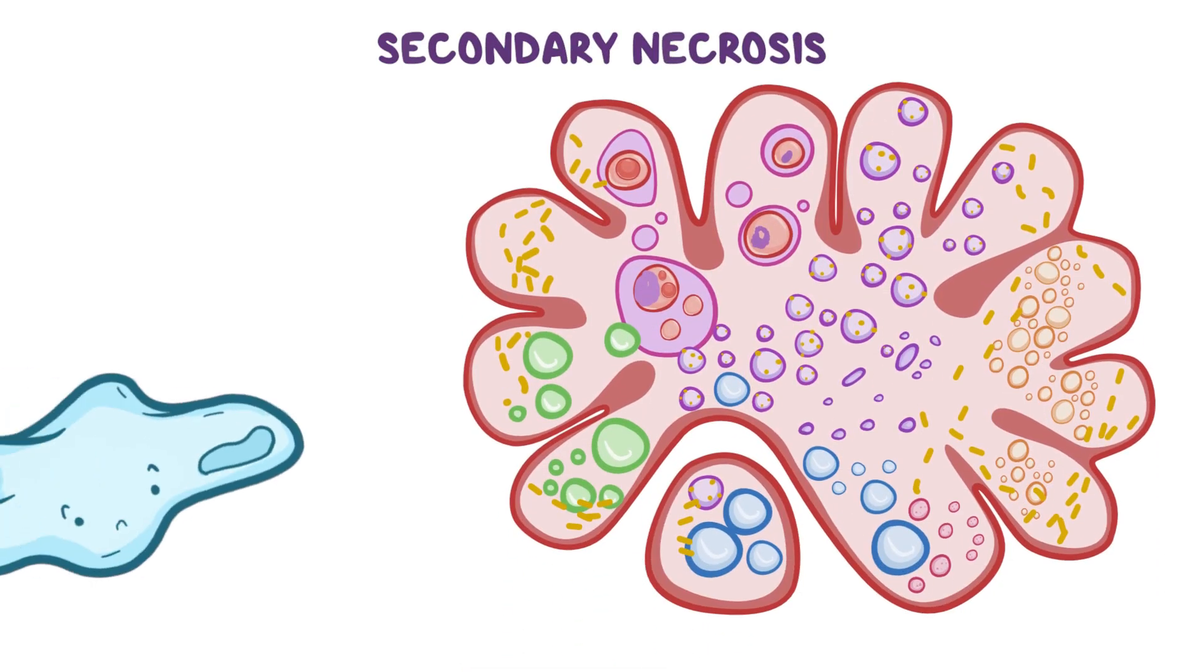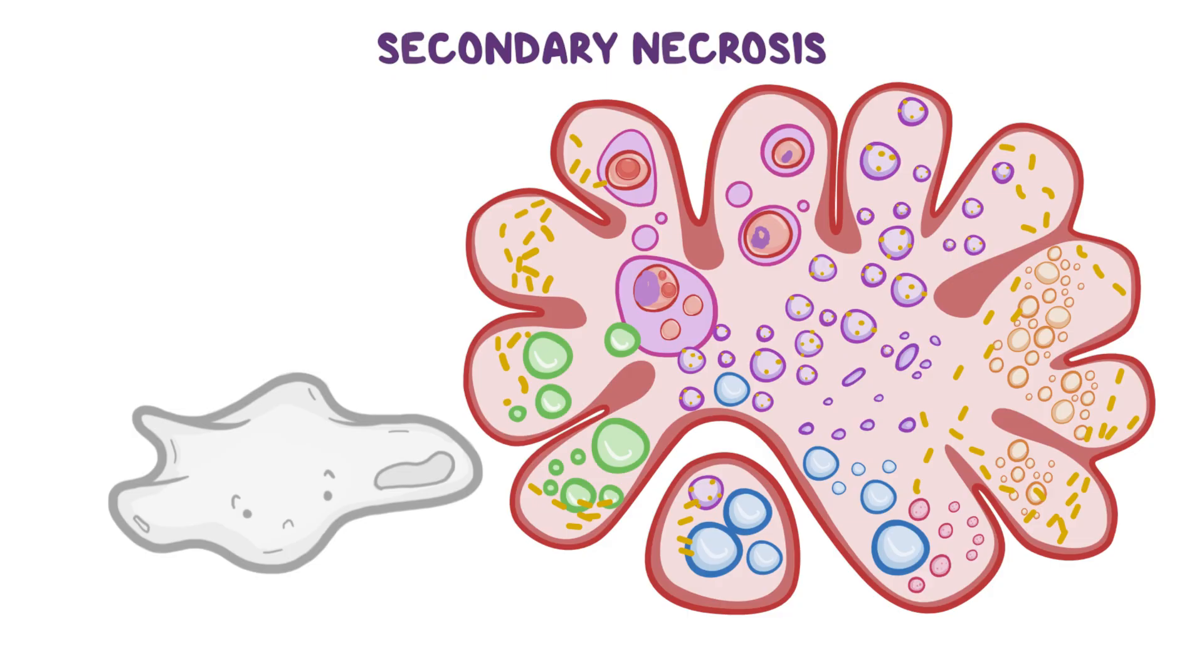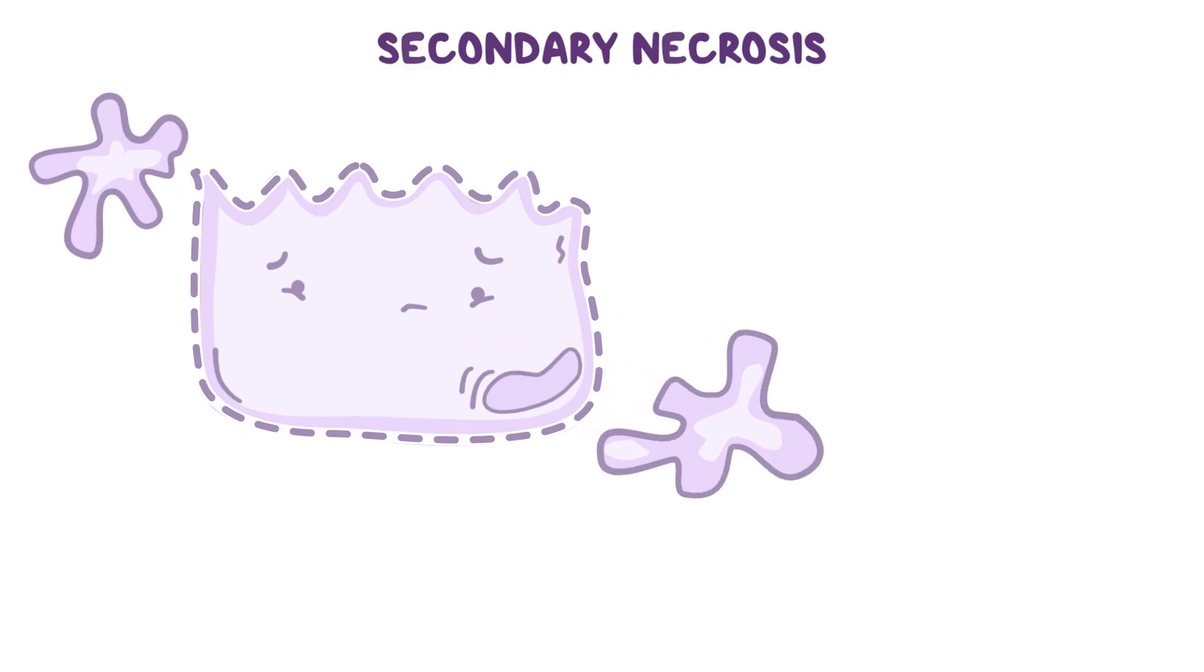Let's take a look at secondary necrosis, which occurs when there are no phagocytes to clean up the mess of an apoptotic cell. As a result, the cell membrane of an apoptotic cell loses integrity and releases internal contents into the surroundings.